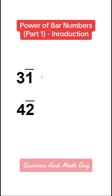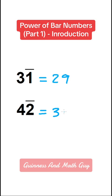In exactly the same way, 3 bar 1 means 30 minus 1, that is 29, and 4 bar 2 means 40 minus 2, that is 38.